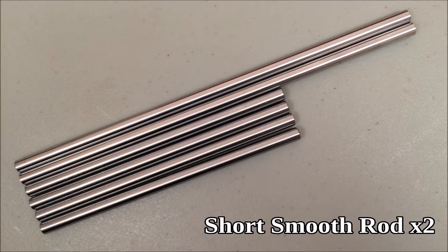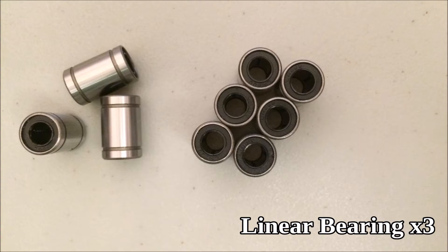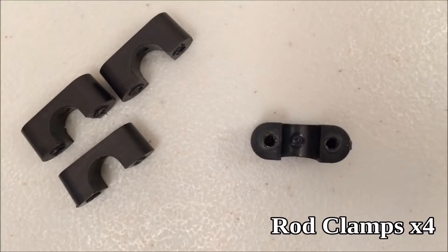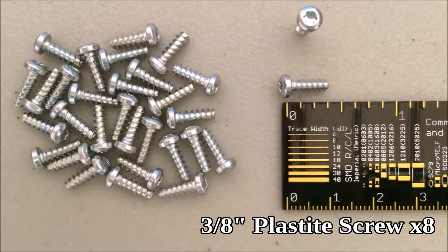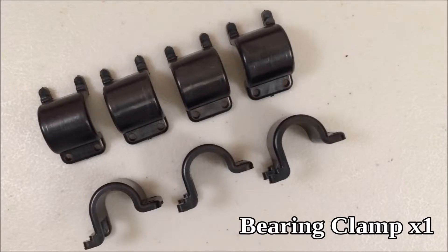You need two of the shorter smooth rods, three linear bearings, four rod clamps—mine are rounded but other kit revisions are rectangular—eight plastite screws, and one bearing clamp.